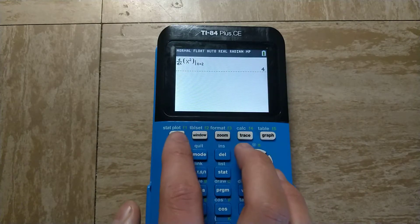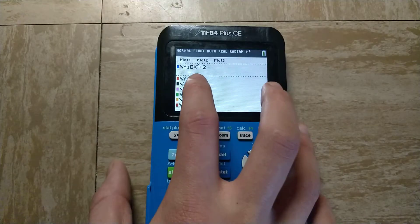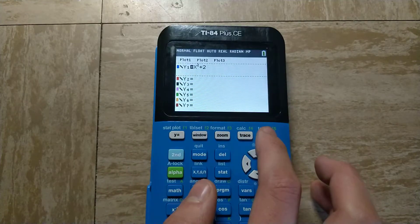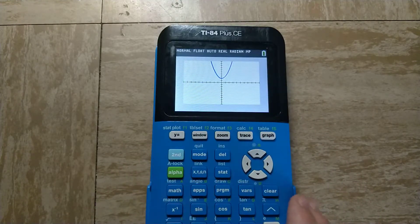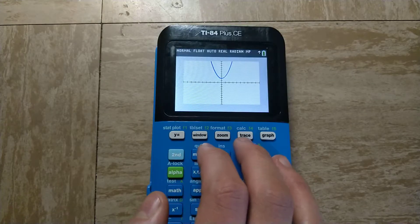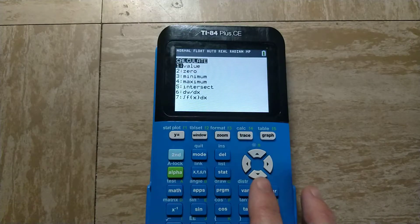You can also do this if you have something graphed on the graph screen. I have x squared plus 2 graphed here, so if I press graph, you can see that. And then if I do second calc, which is the trace key, I will get to this menu.